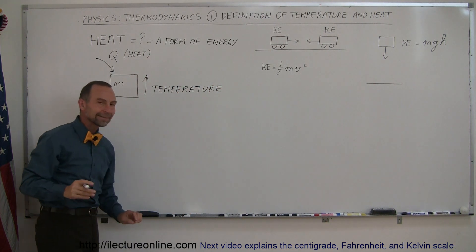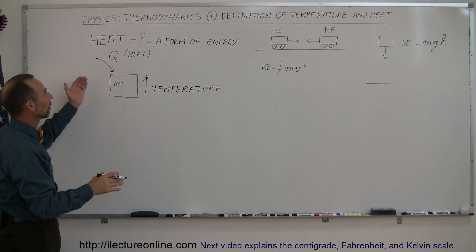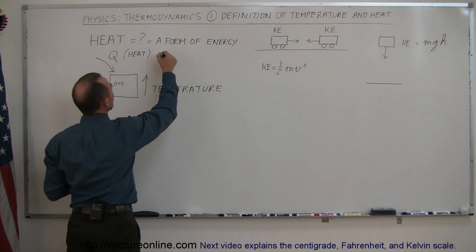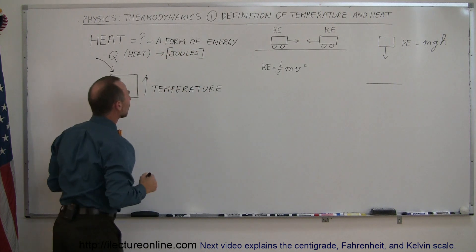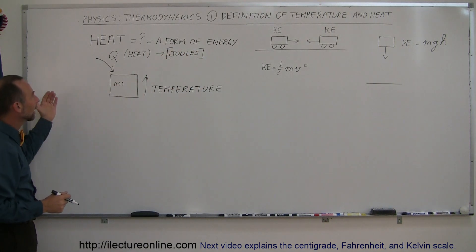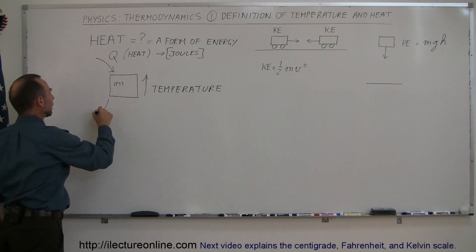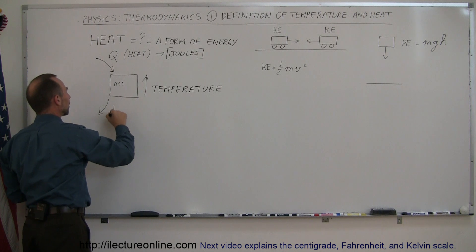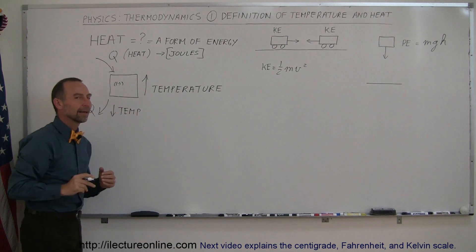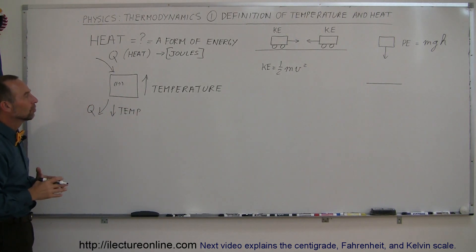so now we can define temperature. So heat is a form of energy. We use the units joules to indicate how much of it we have. We can add it to an object, we can take it away. When we add it to an object, the temperature goes up. When we take it away, the temperature goes down. And so now we can define temperature.